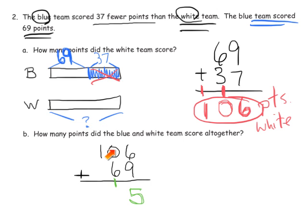And then 0 tens plus 6 tens plus 1 ten, that's 7 tens. No bundling necessary. So that's 7 tens. And then we have 100 and nothing down here. No 100s. So that's 100 total. So the answer is 175 total points.